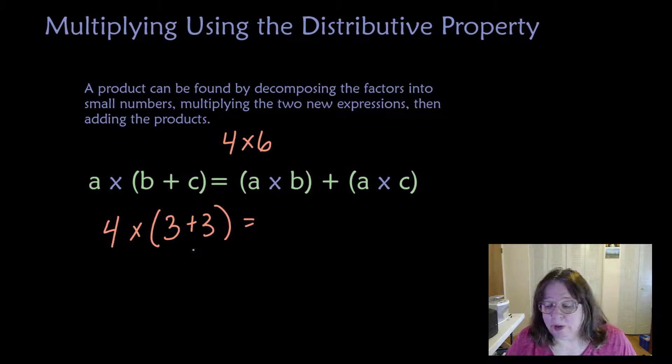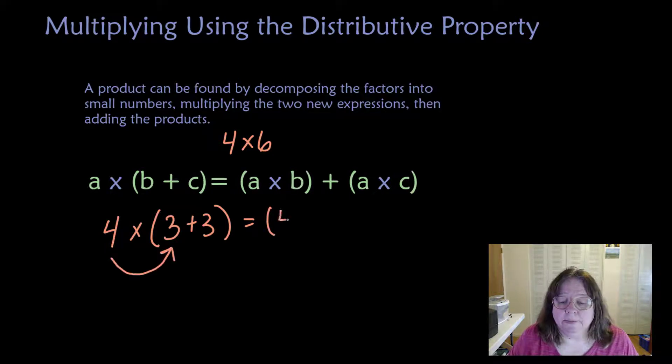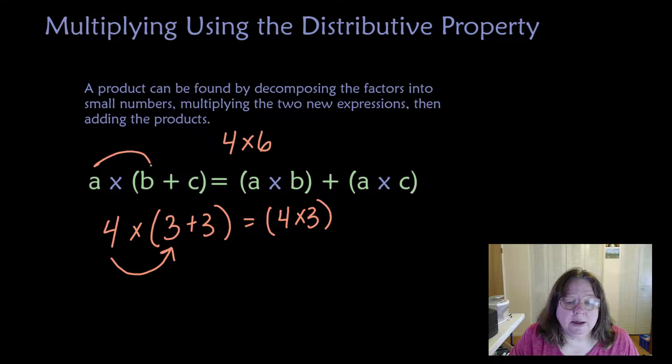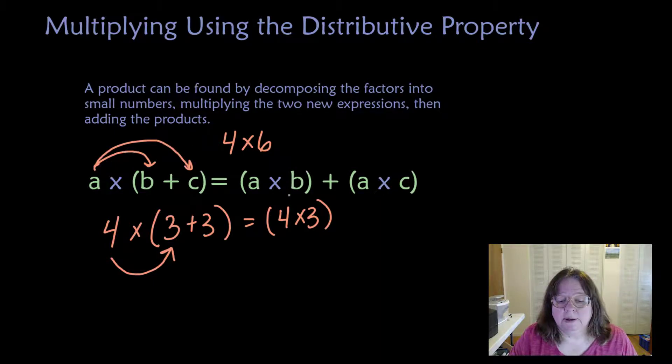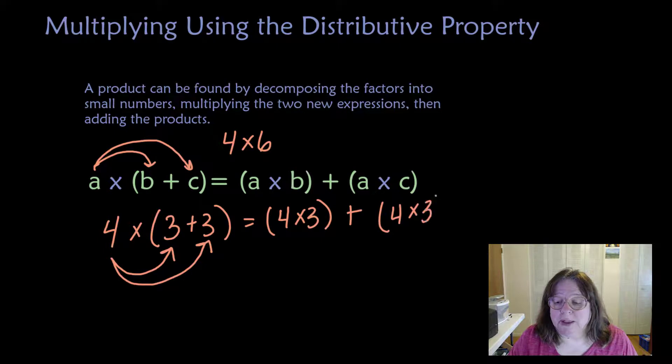Let's break 6 apart into 3 plus 3. That's not the only way we could break it apart. We could break it apart into 5 plus 1 or 4 plus 2. Well, that's going to be the same as 4 times 3, and this is where the word distribute comes in. We're distributing the A to the B and then the A to the C. So we've got 4 times 3, and because this is plus, we're talking about addition here, multiplying over addition. We're going to add the product of 4 times the second 3.